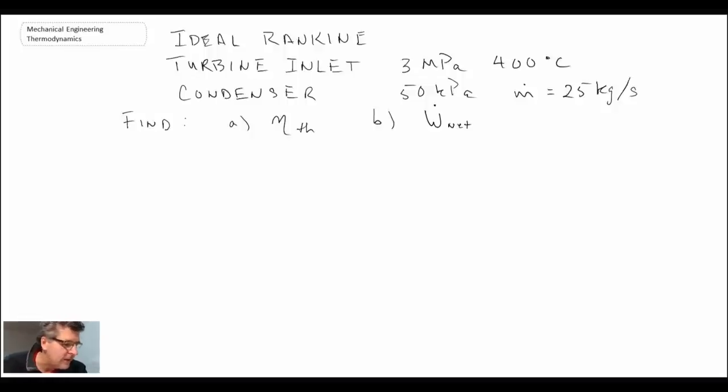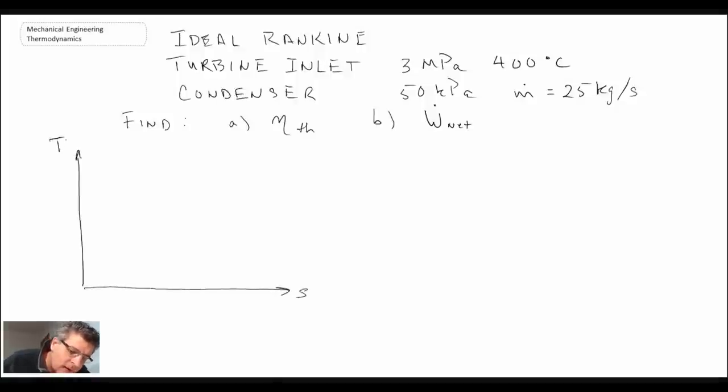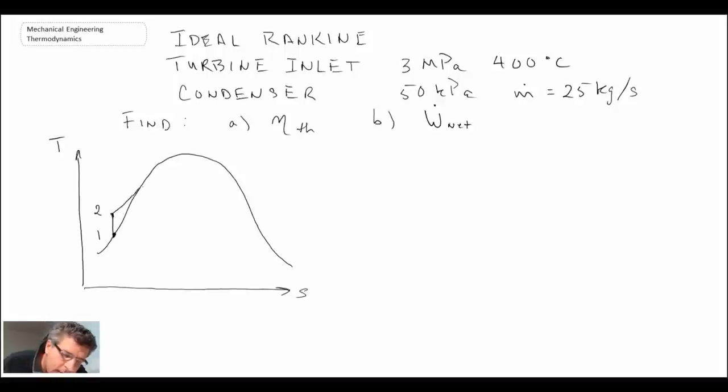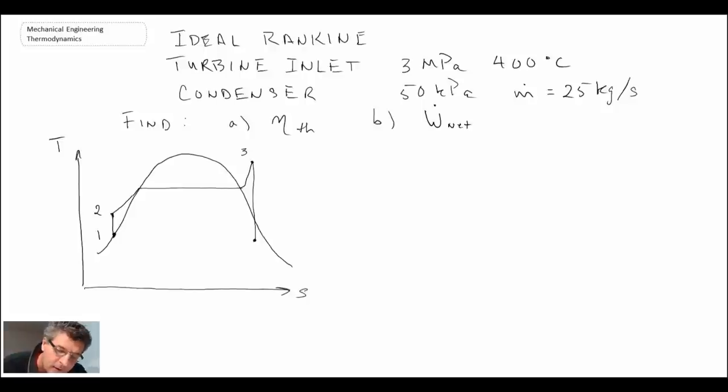Looking at the TS diagram for this cycle, we write our two-phase line. Remember we always start at the compressed liquid region on the left - that is state one. We go through the pump, which takes us up to state two, which then goes into the boiler. We follow the lines and go into a superheated state. That takes us to state three. Then we come through our turbine and we expand to some point.